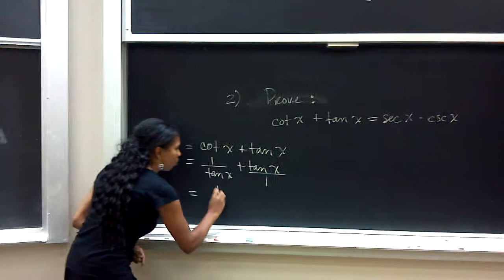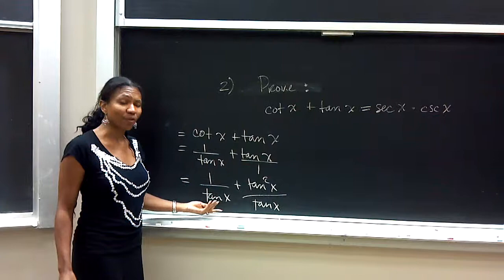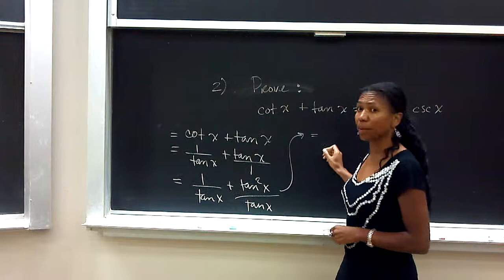So this becomes 1 over tangent x plus tangent squared x over tangent x. We now can combine the fractions over one denominator.